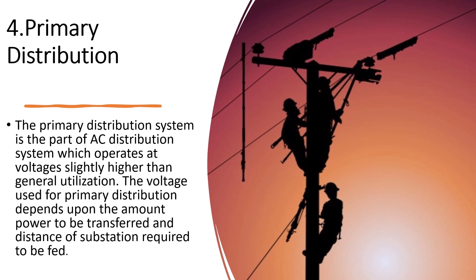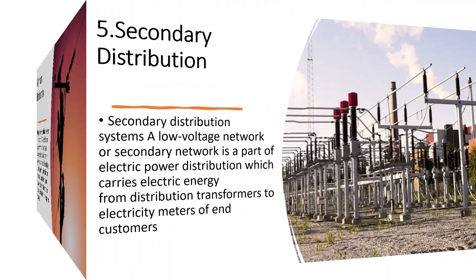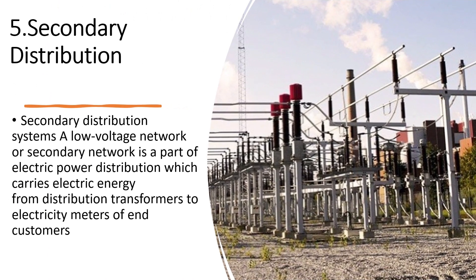The primary distribution system is the part of the AC distribution system which operates at voltages slightly higher than general utilization. The voltage used for primary distribution depends upon the amount of power to be transferred and the distance of the substation required to be fed. The secondary distribution system, or low-voltage network, is a part of electric power distribution which carries electric energy from distribution transformers to the electricity meters of end customers.